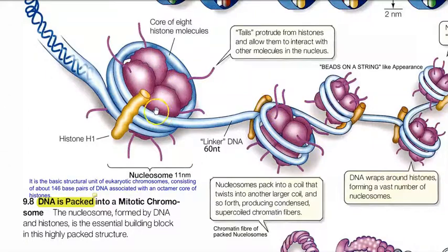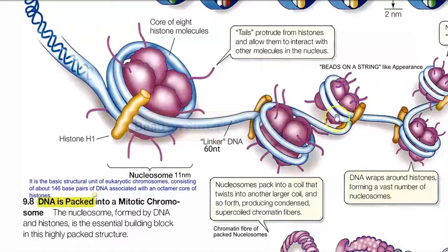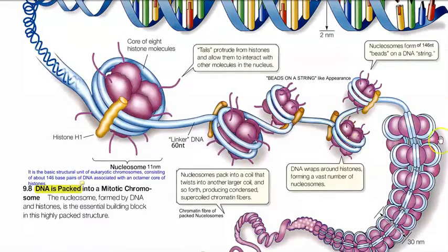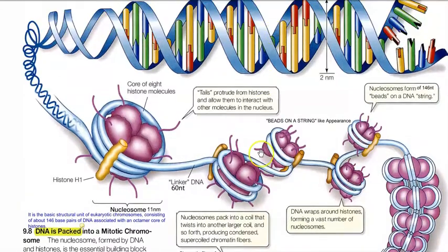This is also called the bead-on-string-like appearance — the string being the linker DNA and the beads being the nucleosomes. This is the level at which DNA molecules are packed inside the cell.